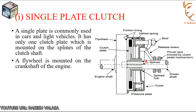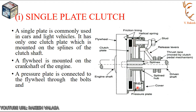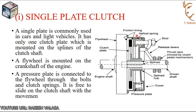This type of clutch employs a disc whose both sides are fixed with friction material, also called the clutch plate or clutch disc. The flywheel is connected to the engine, and the clutch disc is connected to the transmission. The pressure plate is connected to the flywheel through bolts and clutch springs. It is free to slide on the clutch shaft with the movement of the clutch pedal.